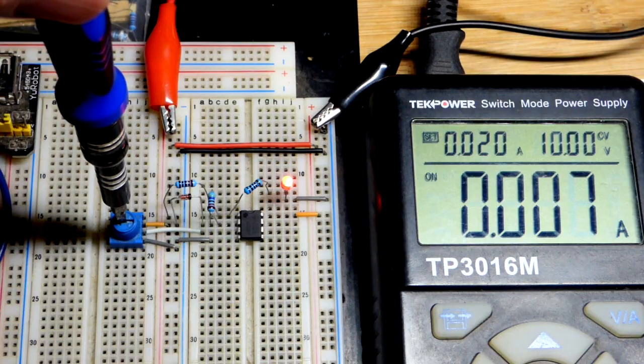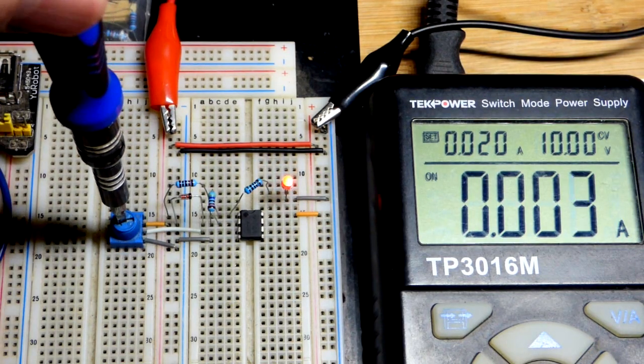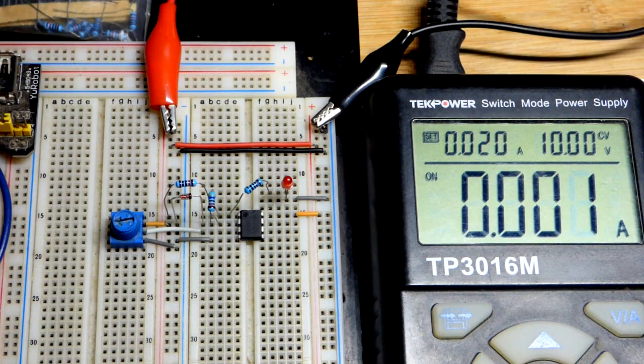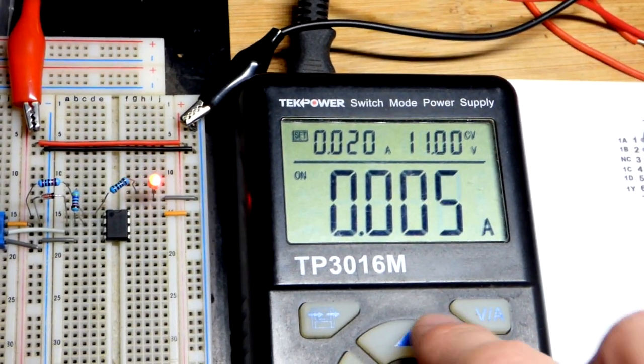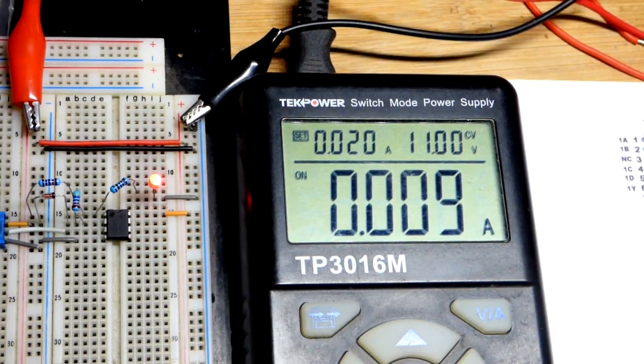Now all I have to do is turn the trim pot down until right when the LED turns off. There we go. It's off. We got 10 volts at the supply right there. If we go to 11 volts, now the LED is on.